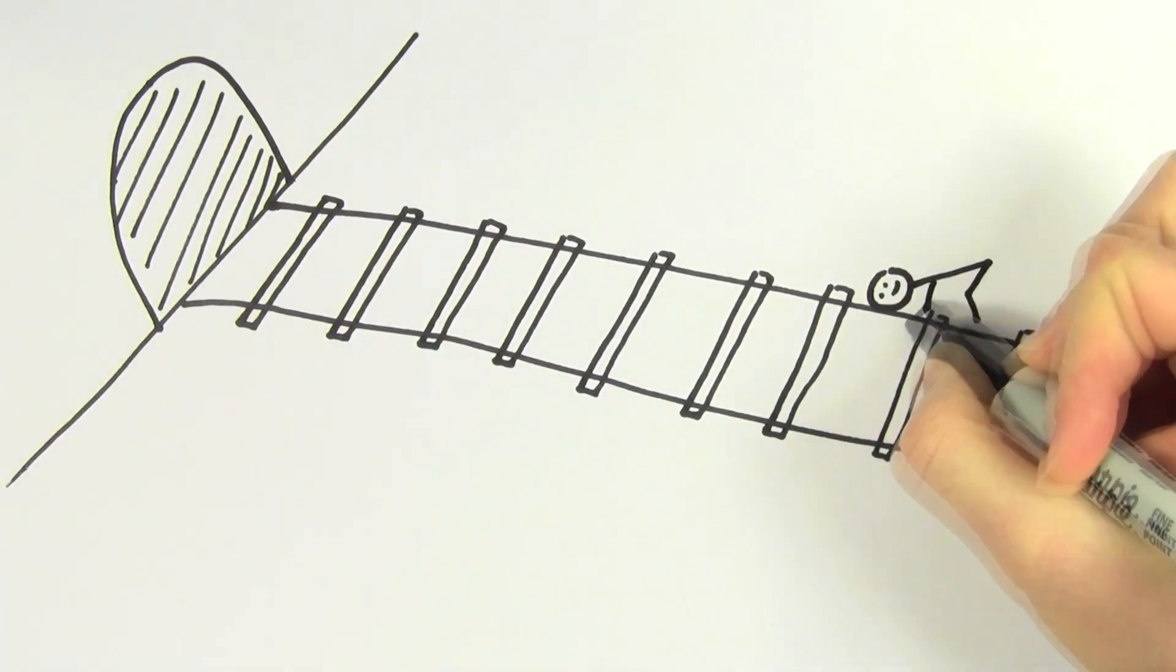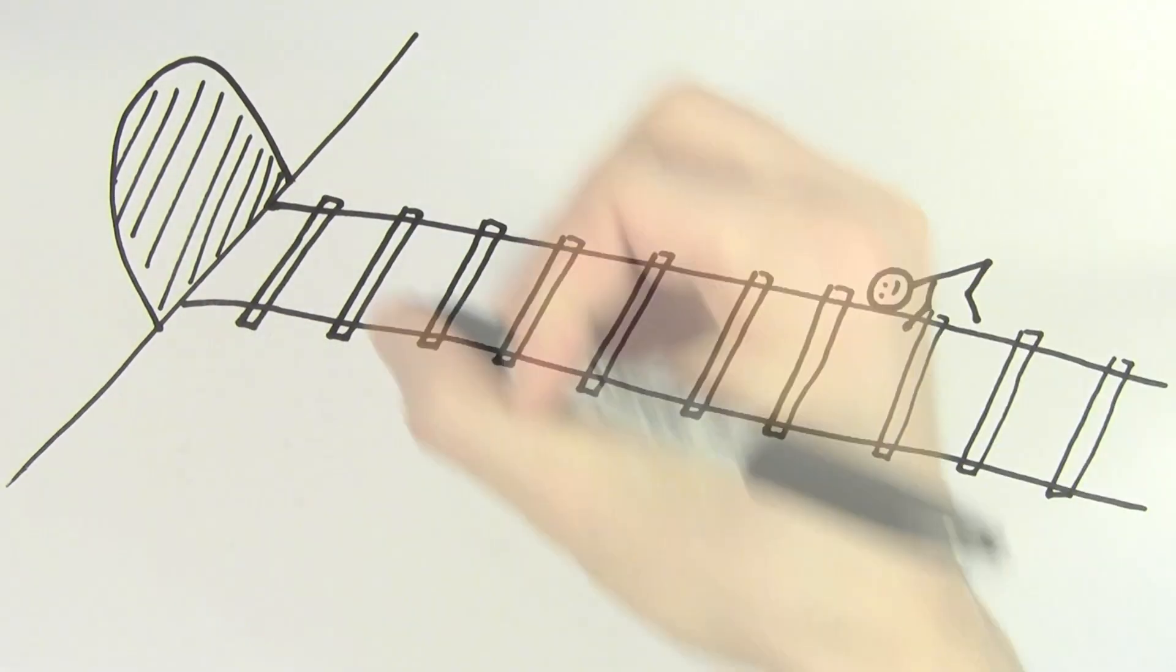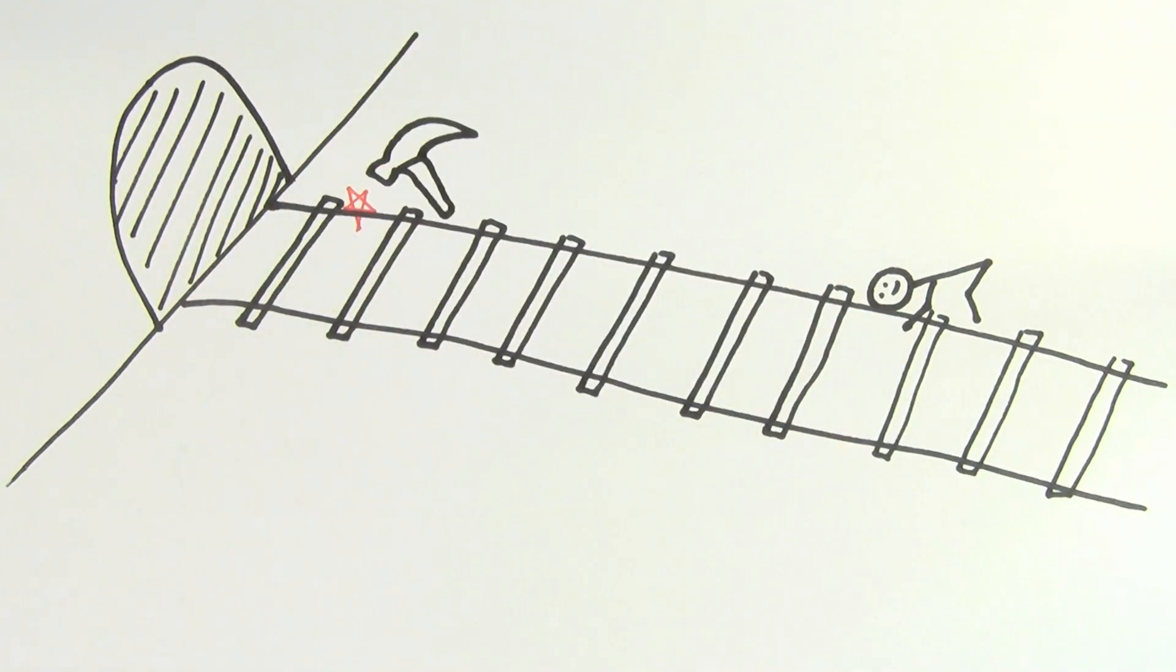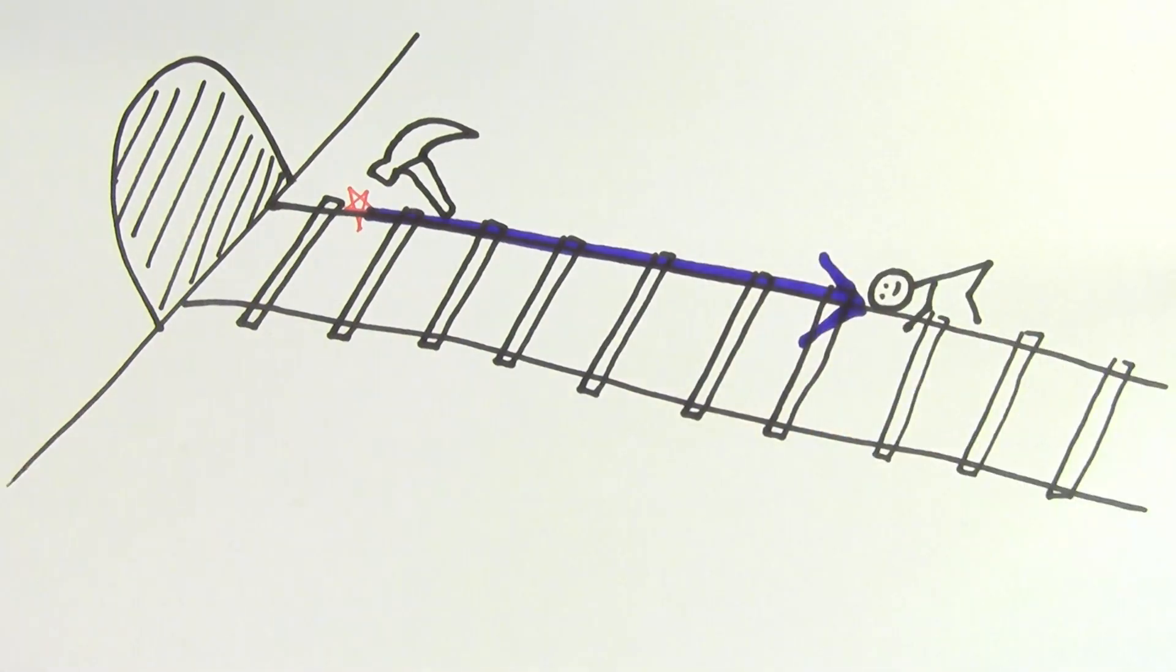This means that if you were to place one ear on a railroad track and someone far away struck the same railroad track with a hammer, you should hear the noise 14 times faster in the ear placed on the track compared to the ear just listening through the air.